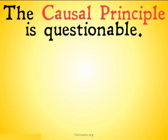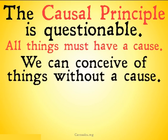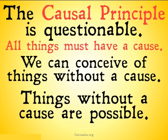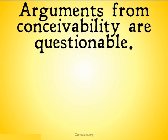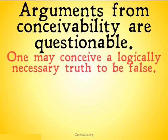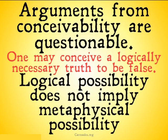The causal principle — that all things must have a cause — is Hume's second objection. Hume argues that we can conceive of things without a cause; therefore, things without a cause are possible: it's conceivable, so it's possible. However, arguments from conceivability are also really questionable. One may conceive a logically necessary truth to be false if one doesn't completely understand it. Also, logical possibility doesn't imply metaphysical possibility — just because something is possible in logic doesn't mean it's actually possible in the real world. So Hume's argument is a little troublesome.